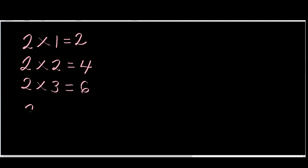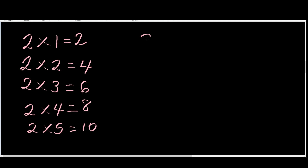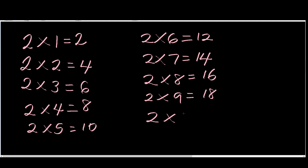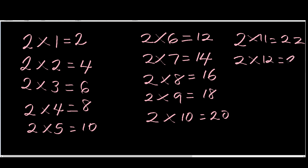What is two times four? Eight. Good. What is two times five? Ten. Good. What is two times six? Twelve. Very good. What is two times seven? Fourteen. Good. What is two times eight? Sixteen. Good. What is two times nine? Eighteen. Good. What is two times ten, Peter? Twenty. And what is two times eleven? Twenty-two. And what is two times twelve? Twenty-four. Okay, good.